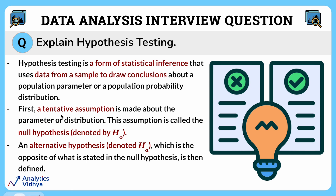To perform hypothesis testing, first a tentative assumption is made about the parameter. This assumption is called the null hypothesis and is denoted by H0. And then there is an alternate hypothesis called HA.